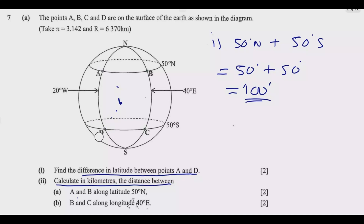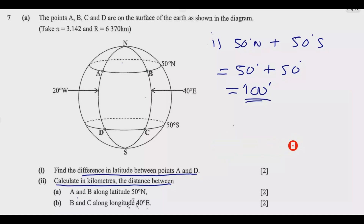Now let me demonstrate how to find the distance between A and B. You connect to the center, and this angle subtends the arc we need — it helps us find the length of the circumference of a sector. We can only find that arc length if we know this angle. To find the angle, we need the difference between 20 degrees west and 40 degrees east. Since they are on opposite sides, we add the two.